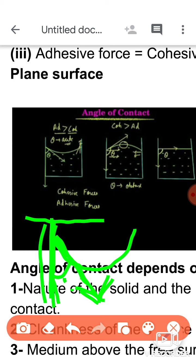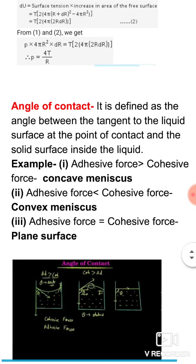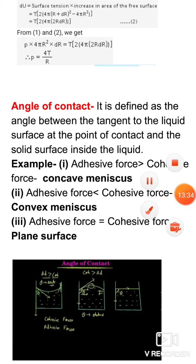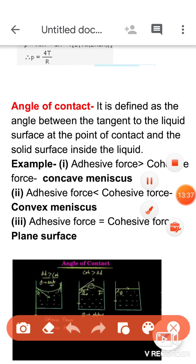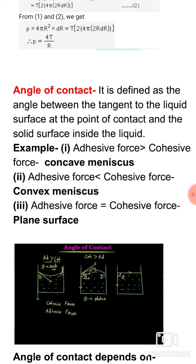Definition clear होनी चाहिए। Words में: it is defined as the angle between the tangent to the liquid surface at the point of contact and the solid surface inside the liquid. 'At the point of contact' add करने से definition more proper हो जाती है — क्योंकि tangent हर जगह हो सकता है, but हम वहाँ की बात कर रहे हैं जहाँ liquid ने solid को touch किया।